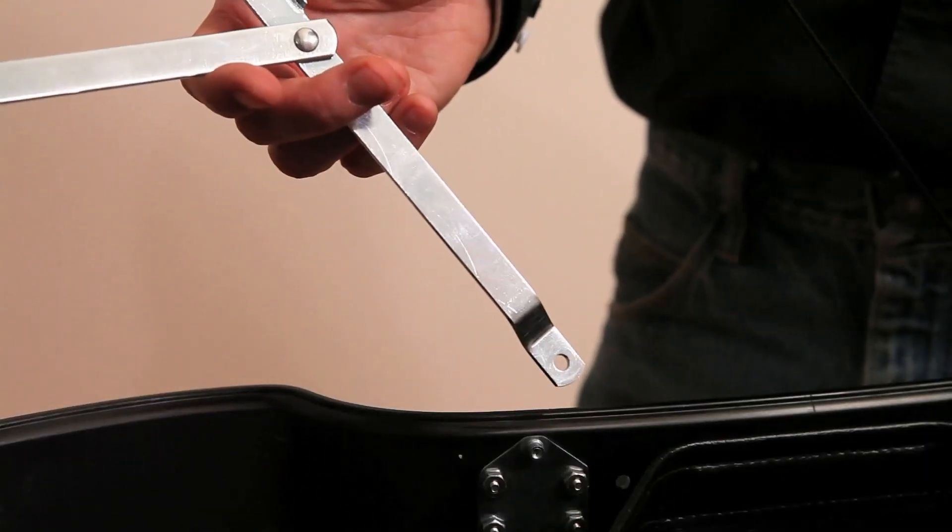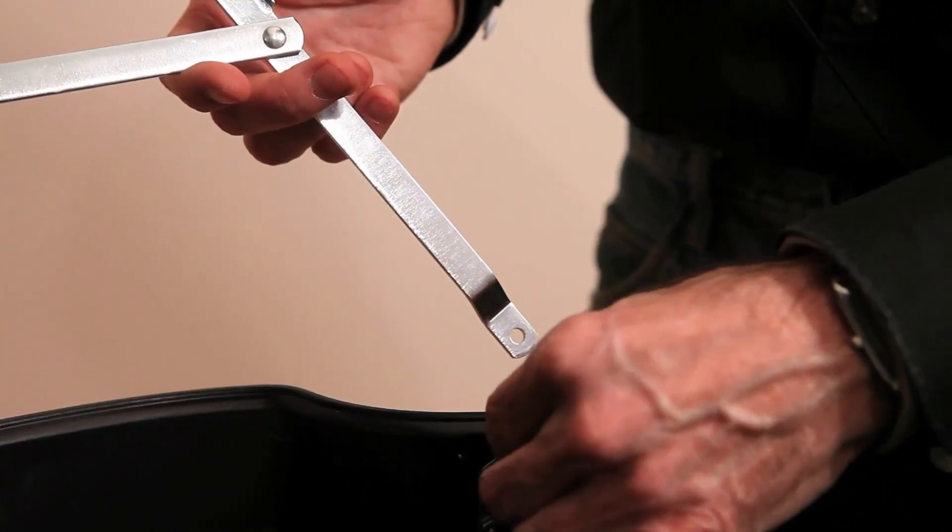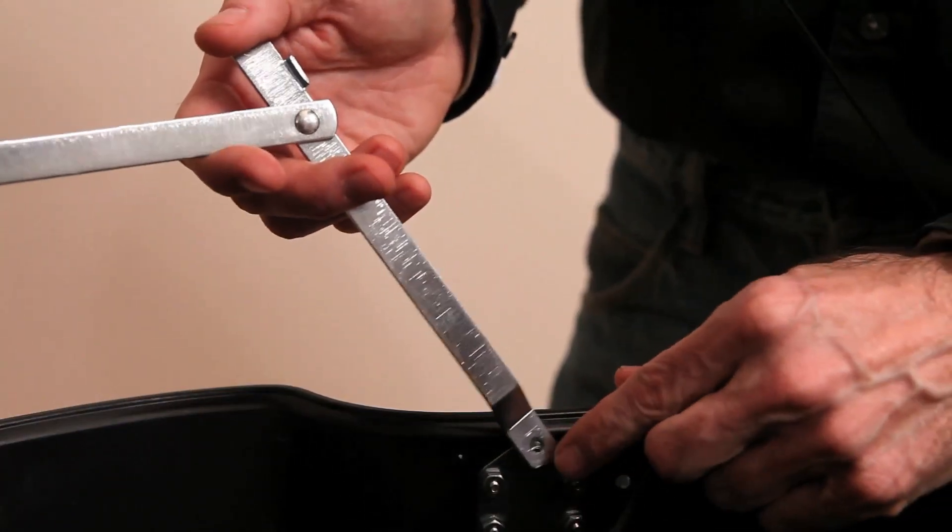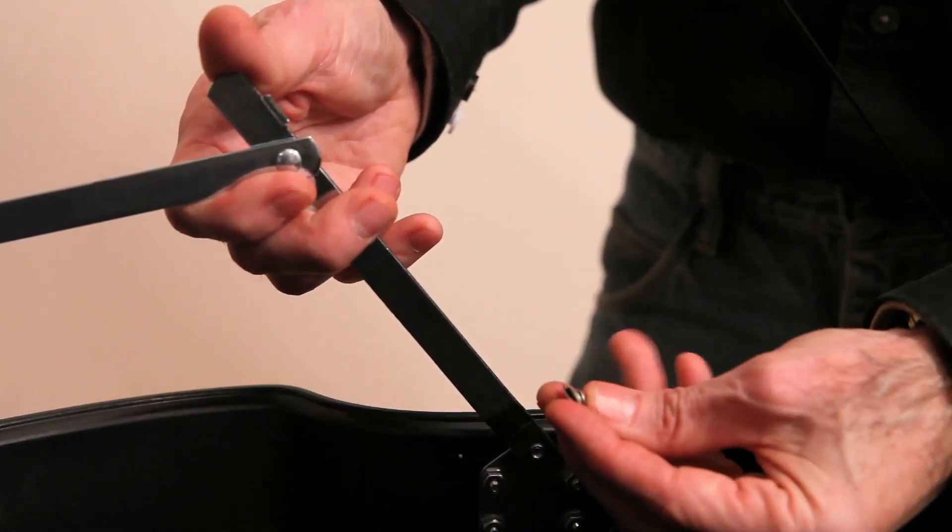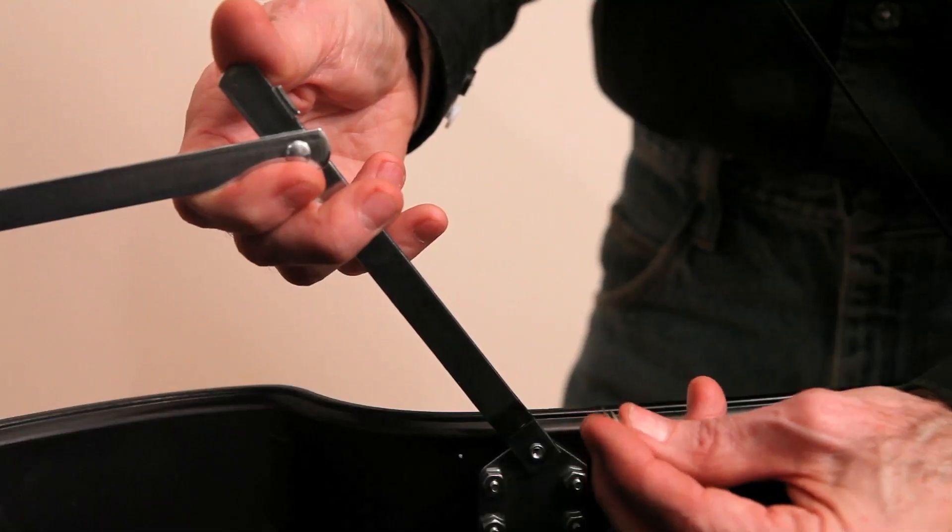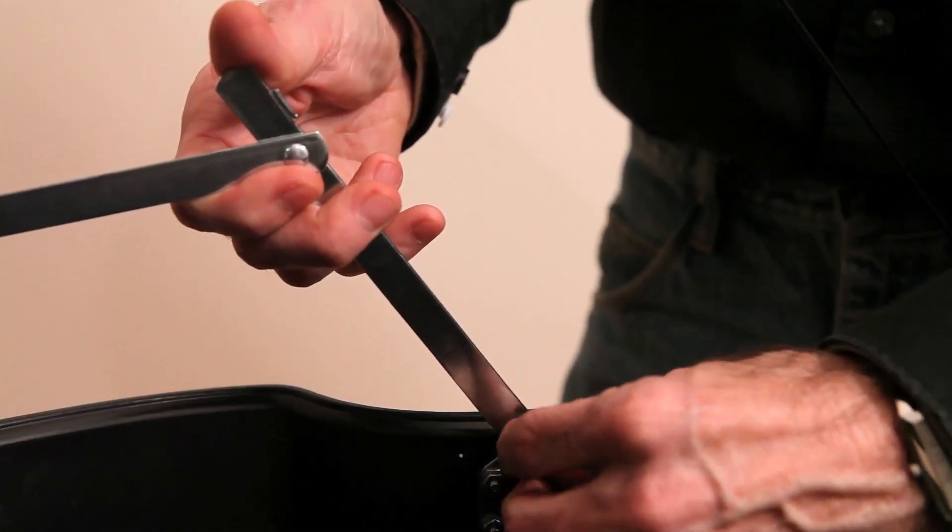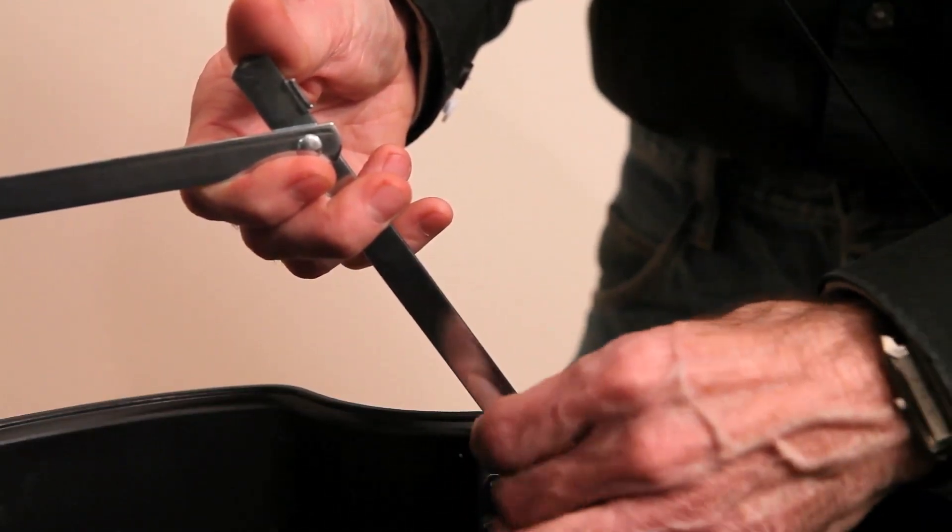Next, we're going to install the brace arm. First, place one of the wave washers on the bottom bracket. Install the brace arm on the bottom bracket. Then, using the hardware stack up with screw, wave washer, washer and lock washer, attach that to the bottom bracket. Just hand tighten for now.